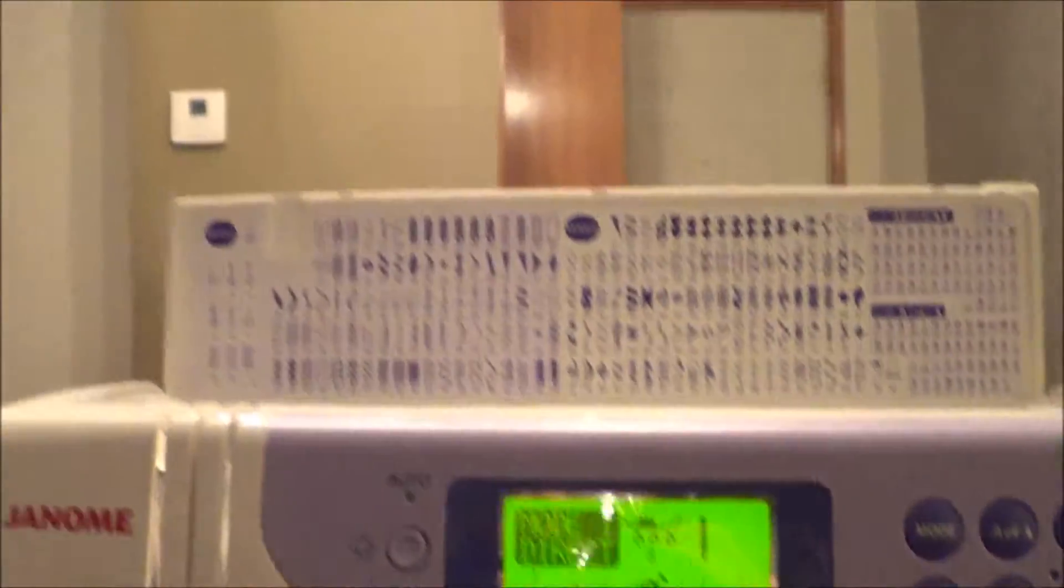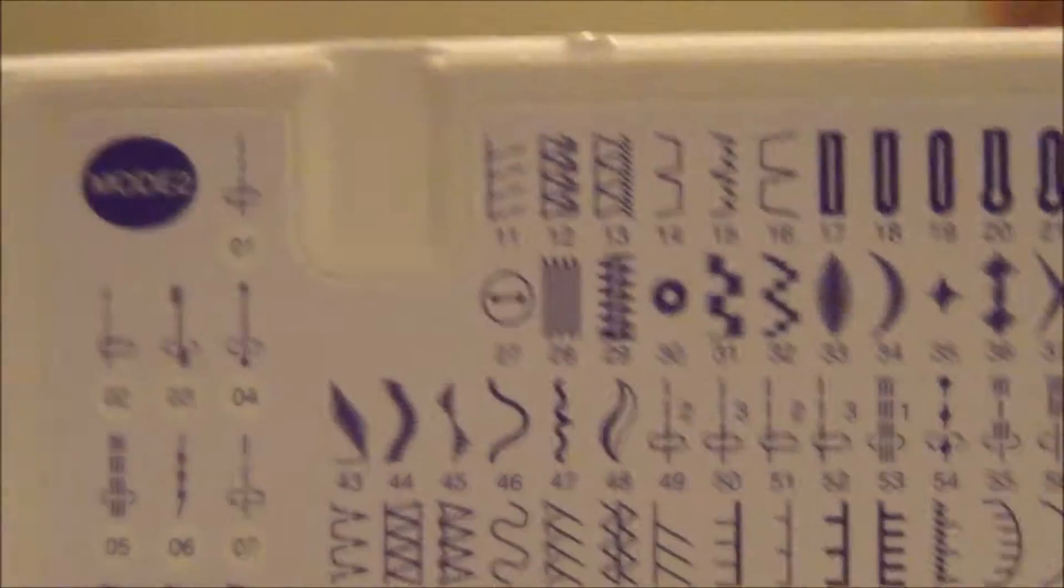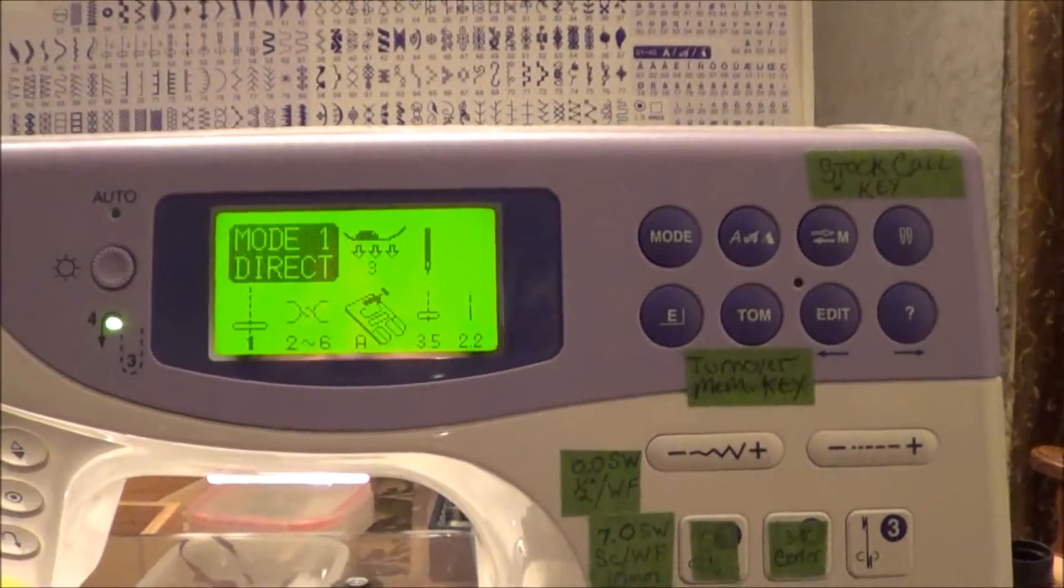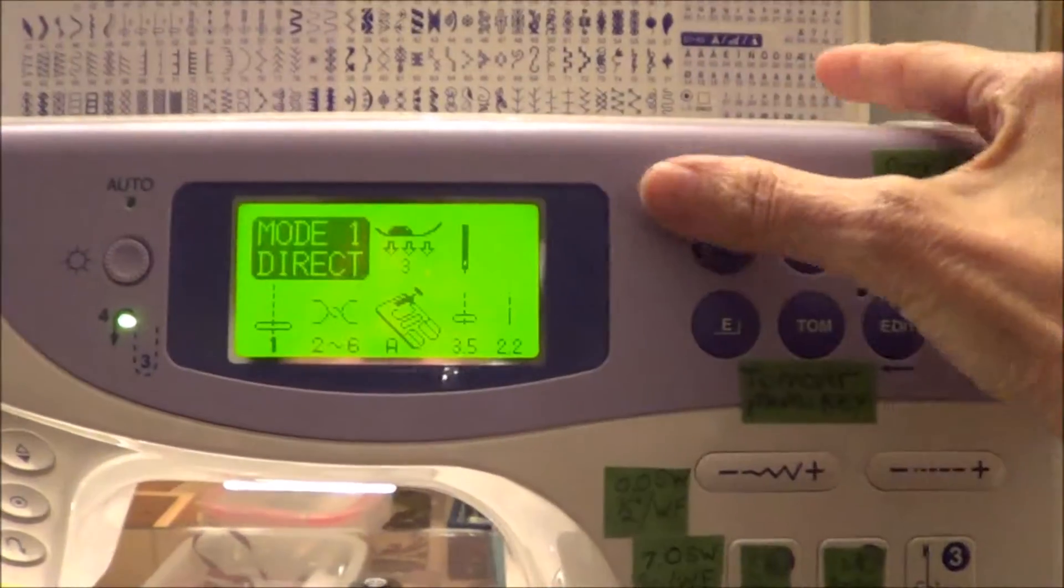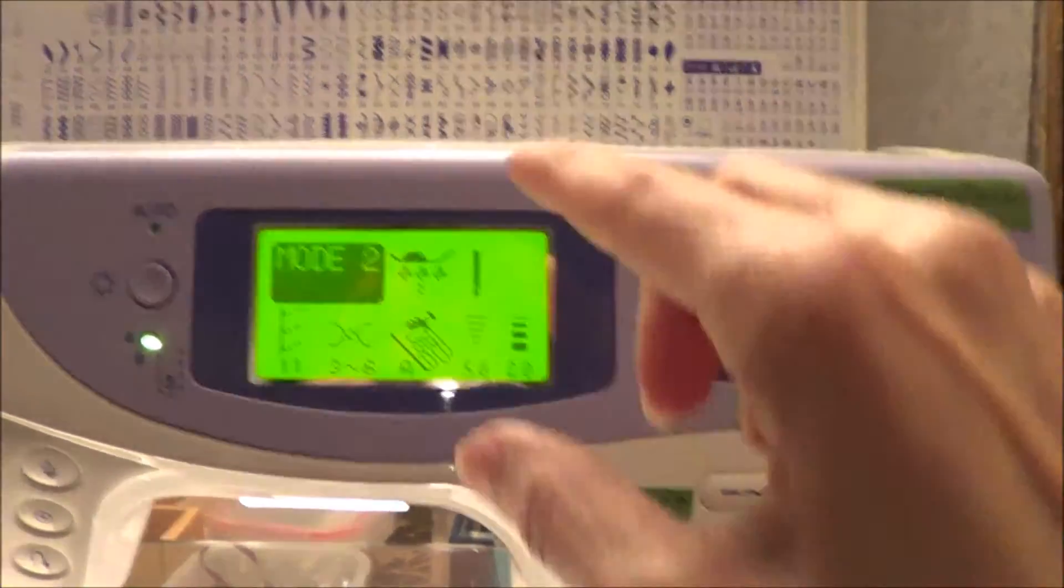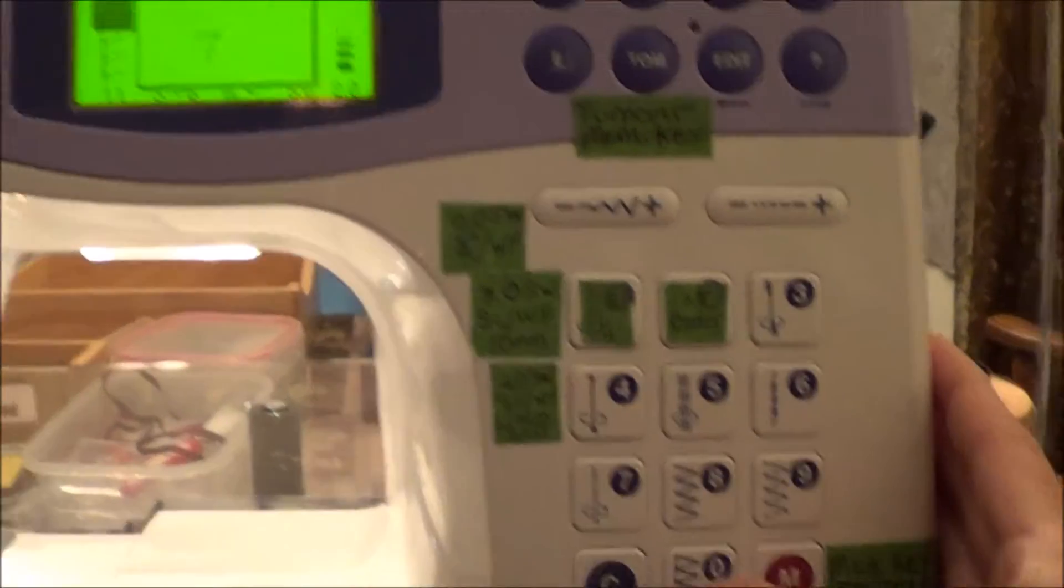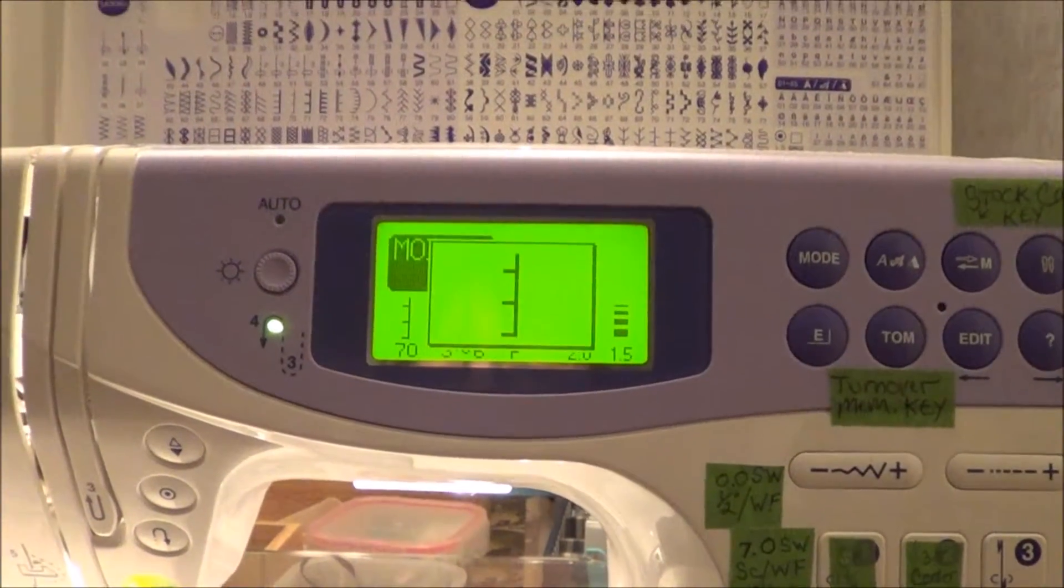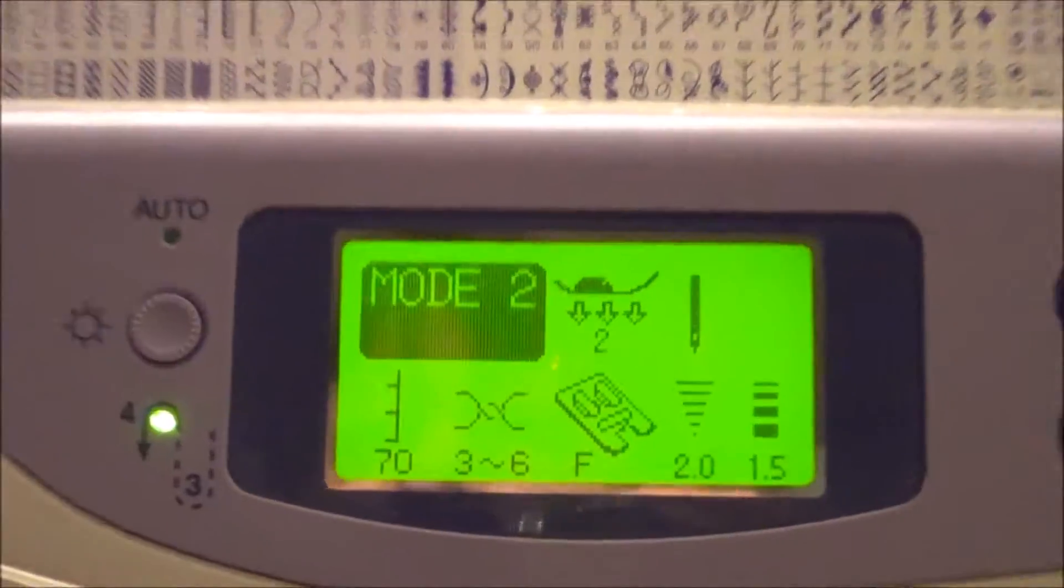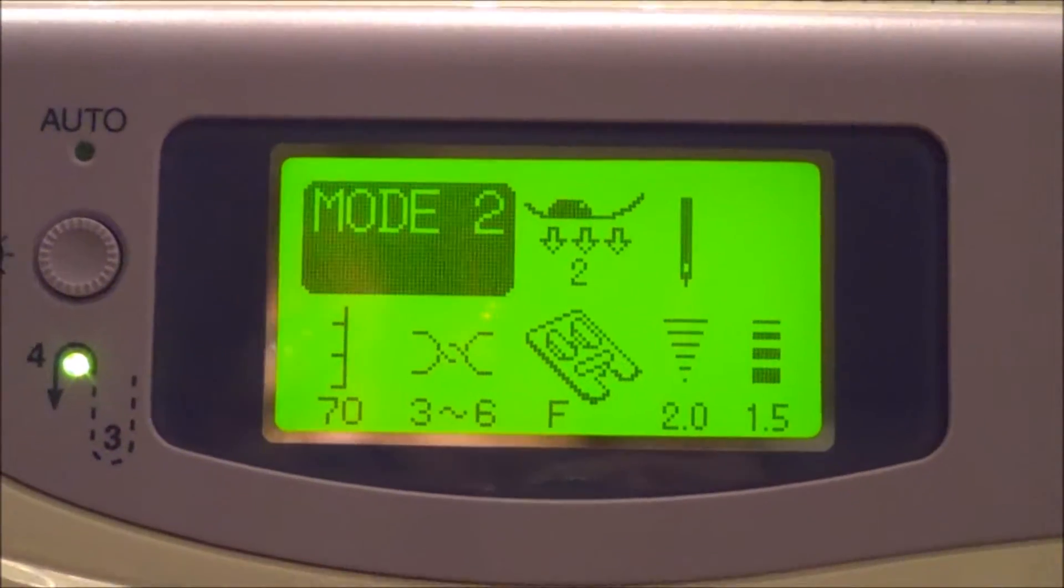So it's in mode 2. You can see up there that that stitch is in mode 2. So you go over here. It's in mode 1 now. You go to mode 2 and you choose. It was stitch 70. So you go down here, 70, 70, and you can see the stitch that's showing is going in the wrong direction.